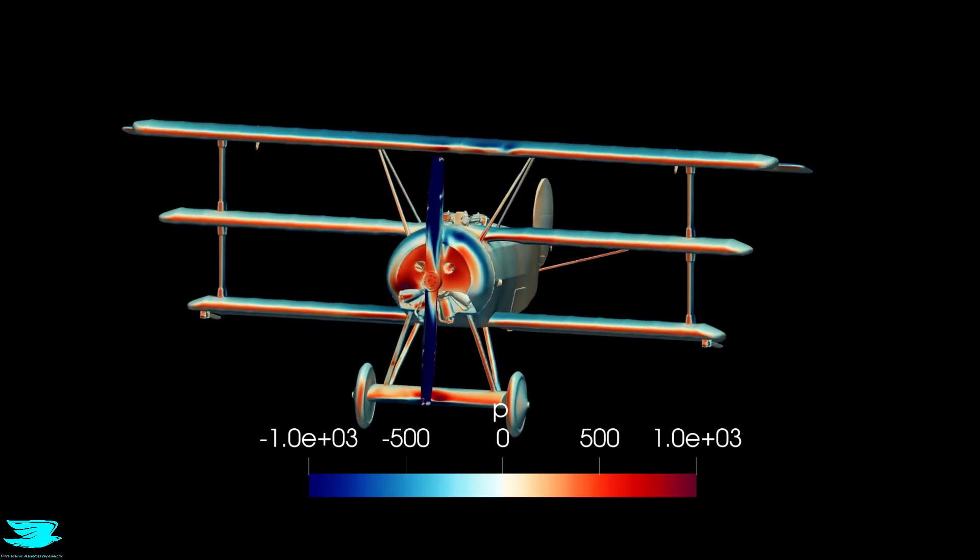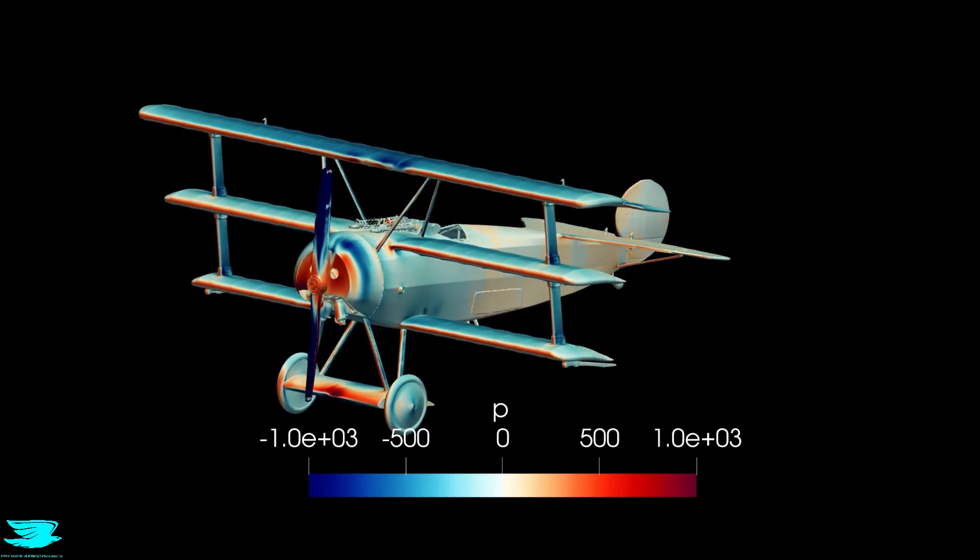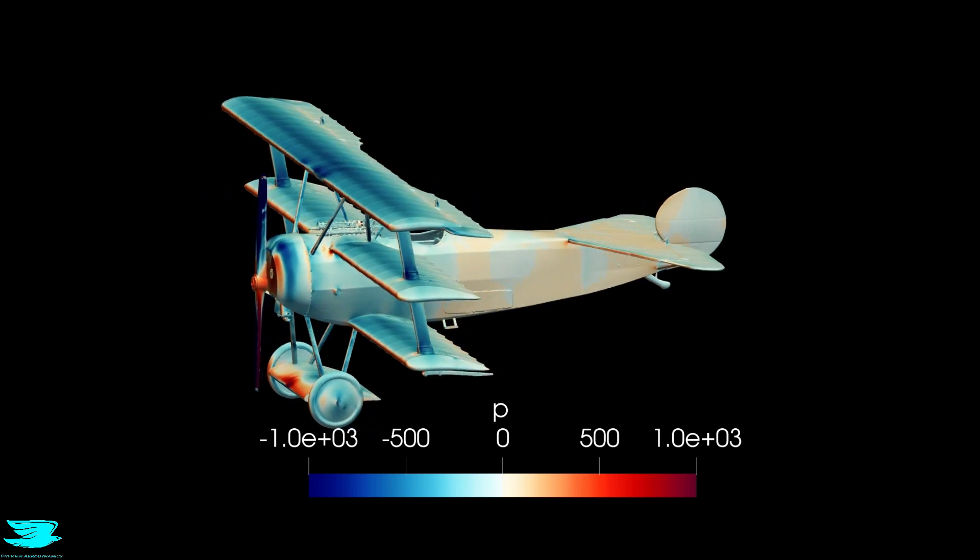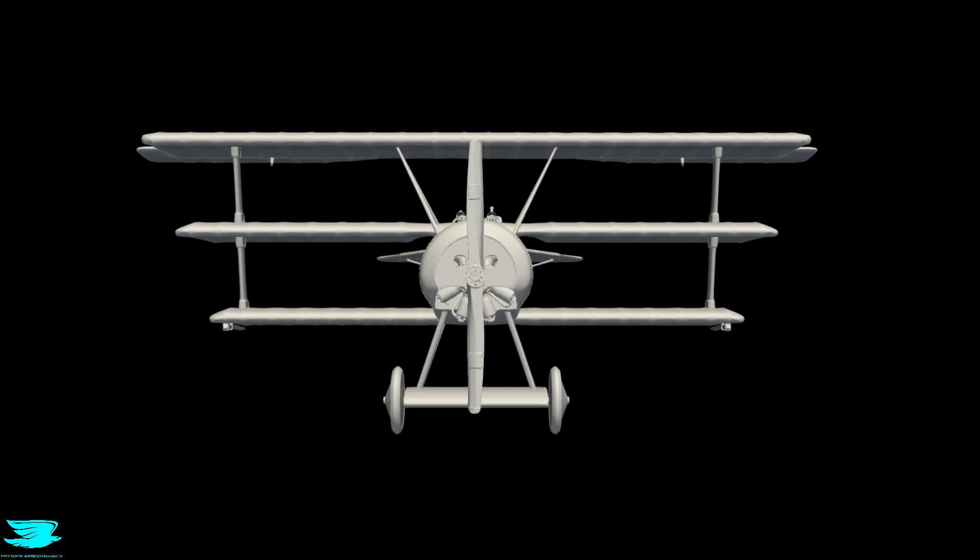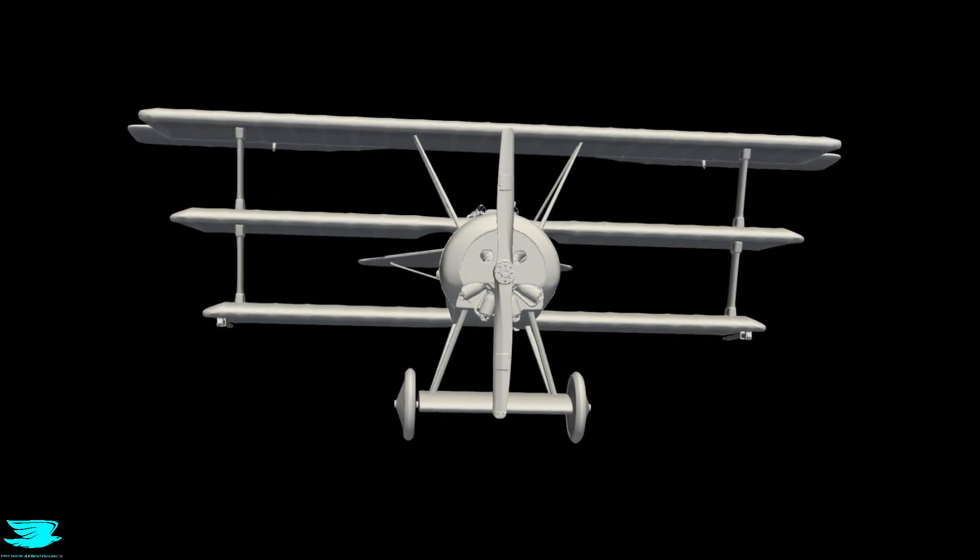This is the aerodynamics of the Red Baron's airplane, the Fokker DR1, and we'll see in this video why it's arguably the most important plane after the Wright Brothers Flyer. The technology in this really changed how airplanes were designed afterwards.